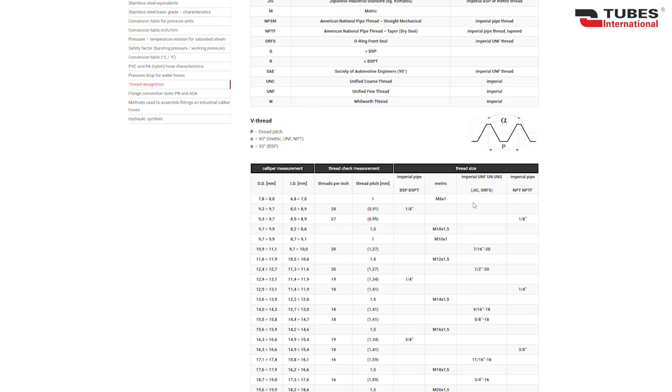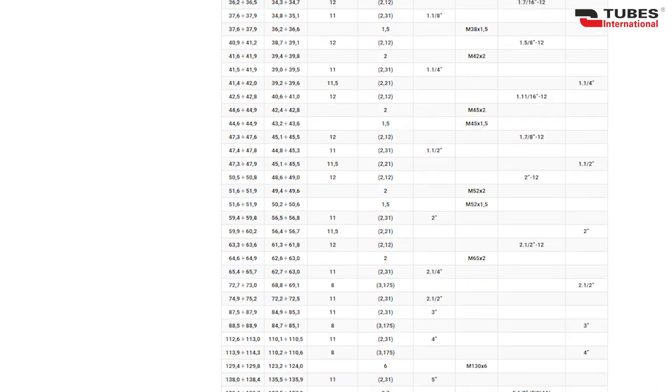Let's look at the table. Start by finding the range that contains the diameter of our thread. Then check the thread pitch, or the number of turns per inch.